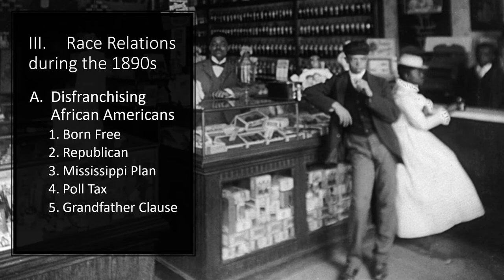Disenfranchisement included complicating the registration and voting process, as well as instituting the secret ballot. The most common form was the poll tax — a tax imposed on voters as a requirement for voting. Most Southern states imposed poll taxes after 1900 to disenfranchise Black people, though the measures also restricted the white vote. Then came the grandfather clause — a rule requiring potential voters to demonstrate that their grandfathers had been eligible to vote, used after 1890 to limit the Black electorate, since most Black men's grandfathers had been slaves, effectively banning their descendants from future voting.